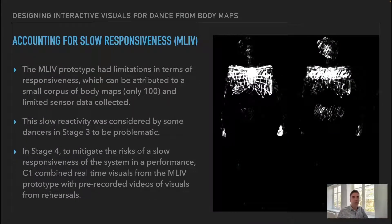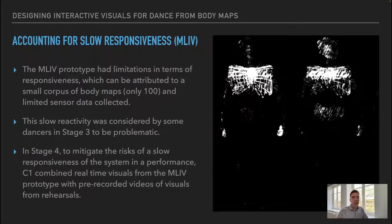Accounting for sole responsiveness: the MLIV prototype had limitations in terms of responsiveness, which can be attributed to a small corpus of body maps — only 100 — and limited sensor data collected. This slow reactivity was considered by some dancers in stage 3 to be problematic. In stage 4, to mitigate the risks of slow responsiveness in a performance, C1 combined real-time visuals from the MLIV prototype with pre-recorded videos of visuals from rehearsals.